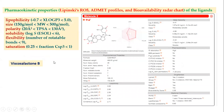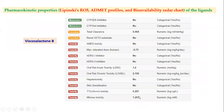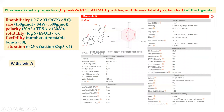For Viscosalactone B, a phytochemical from Withania somanifera, the bioavailability score is very high at 0.55, meaning it is orally bioavailable. All criteria on the bioavailability radar—lipophilicity, size, polarity, solubility, flexibility, and saturation—are located within the pink (acceptable) region. This makes it very useful as a drug candidate against Mycobacterium tuberculosis. The ADMET analysis shows Viscosalactone B is Ames toxicity negative, with no hepatotoxicity or skin sensitization.